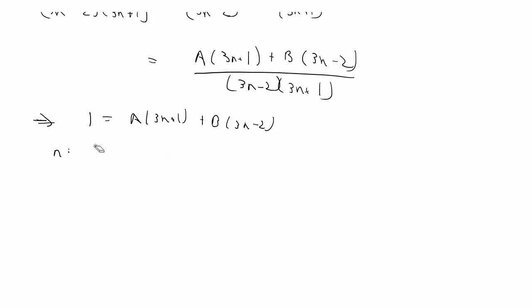To cancel out A first, we're going to want 3 in the denominator and then negative 1. If we plug in negative 1/3 for n, that will give us 1 equals A times 3 times negative 1/3 plus 1, which gives you 0, plus B times 3 times negative 1/3 minus 2. That's going to give you 1 equals 0 plus B times negative 3. So negative 3B equals 1, so B equals negative 1/3.